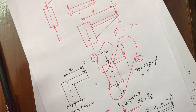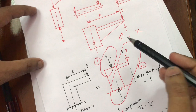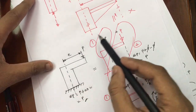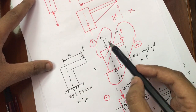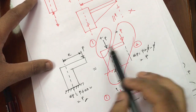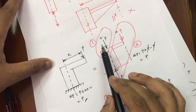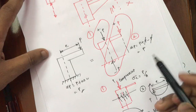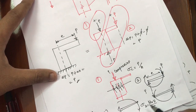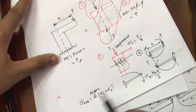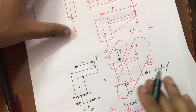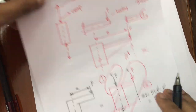Whenever we see an eccentric problem, we draw the diagram of eccentricity, convert it into a normal loading condition by adding one positive and one negative force, then form two separate combinations: one direct force and one couple. We calculate the direct stress and the bending stress, and by doing the summation, we get the total stress value. These are the eccentric loading conversion steps to normal loading condition.